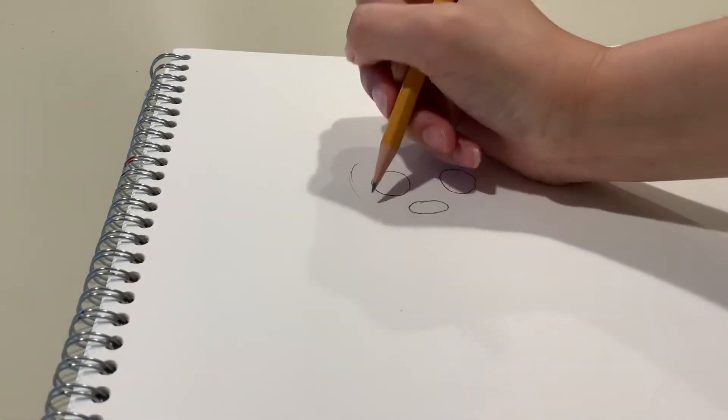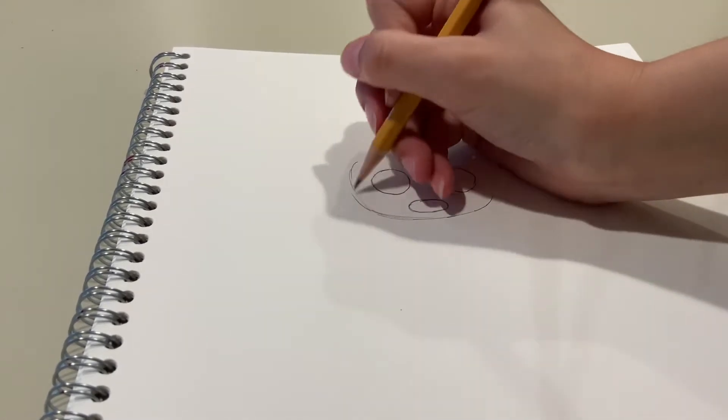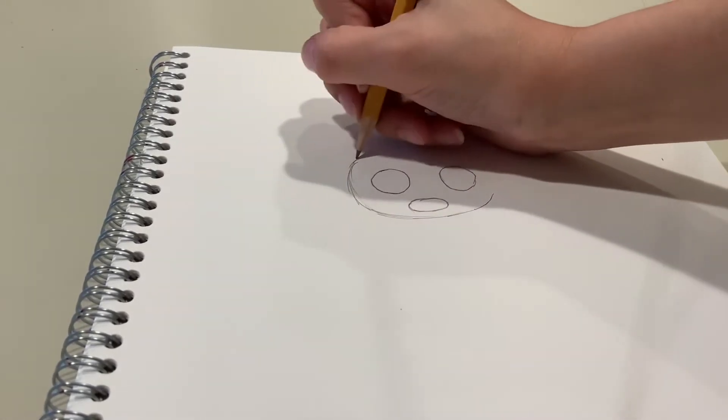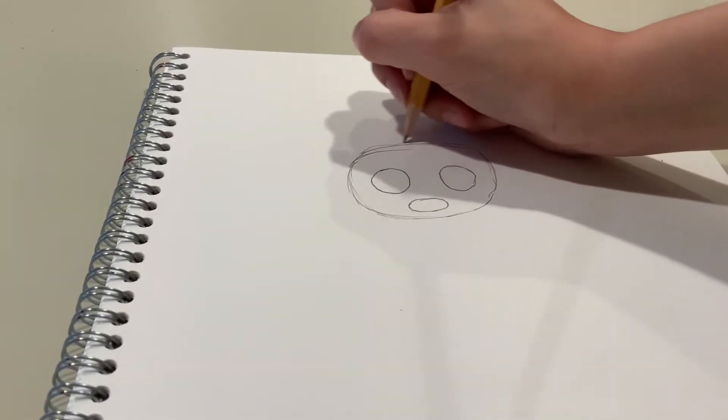So now I'm going to start working on her head, and you can make it a bit oval-ish or a bit more circle, kind of shaped. Mine came out a bit more oval, but either way looks pretty good.